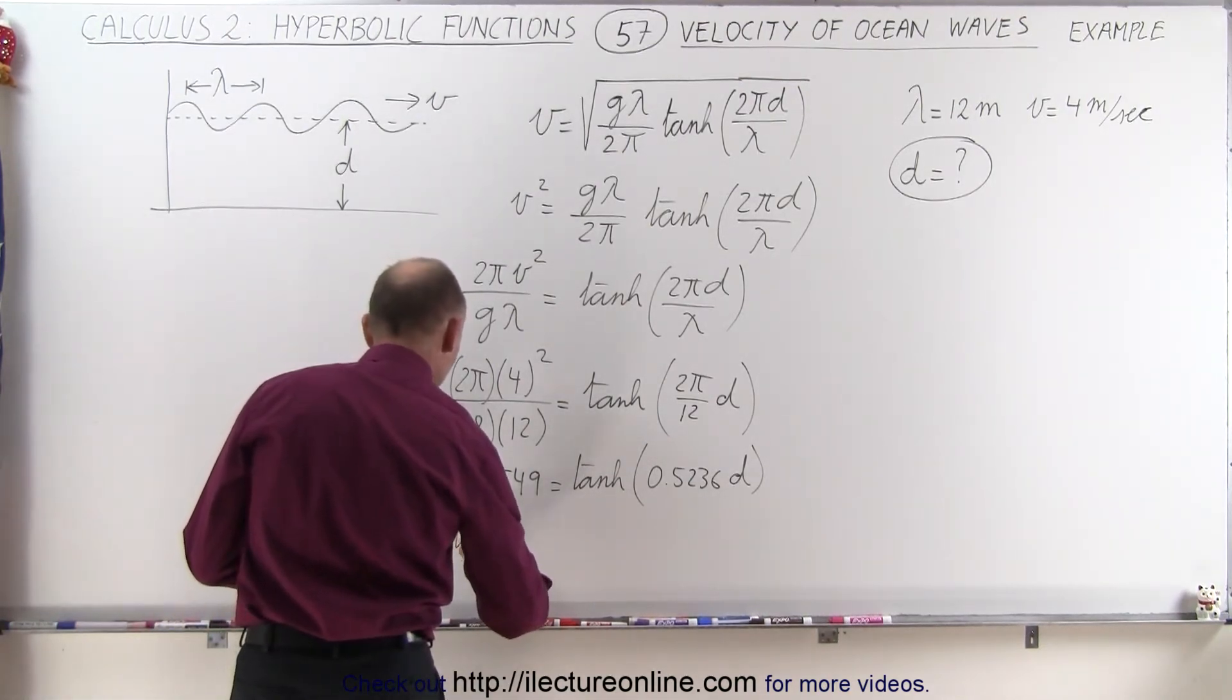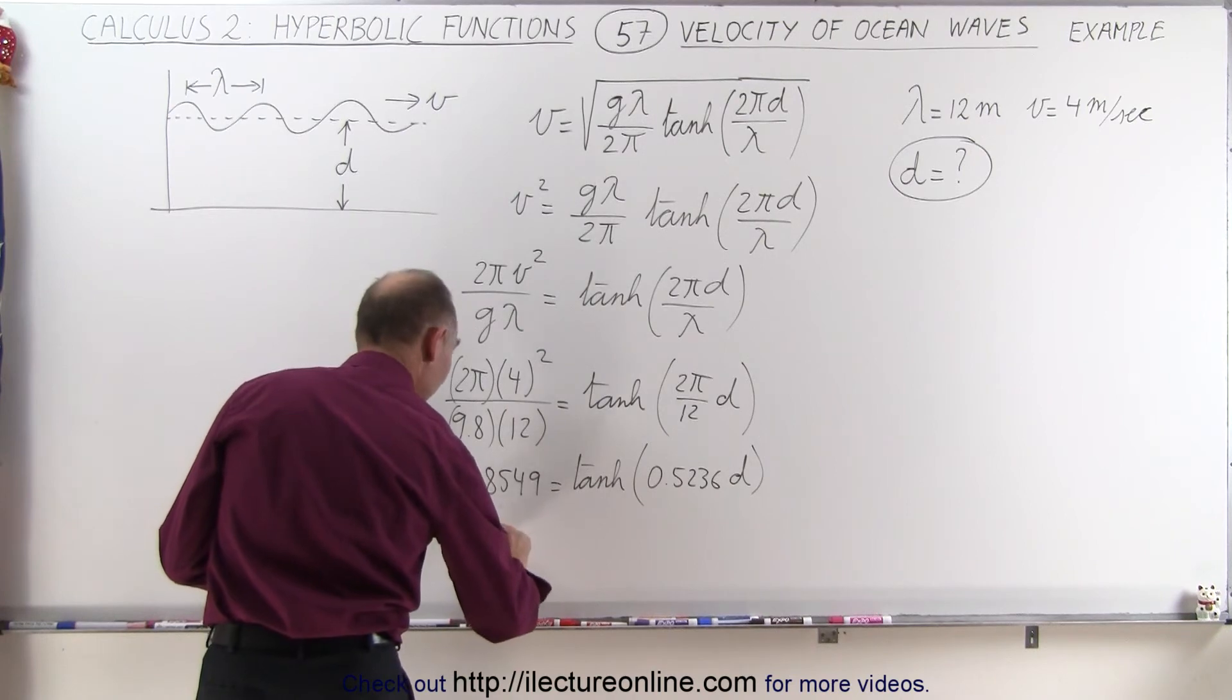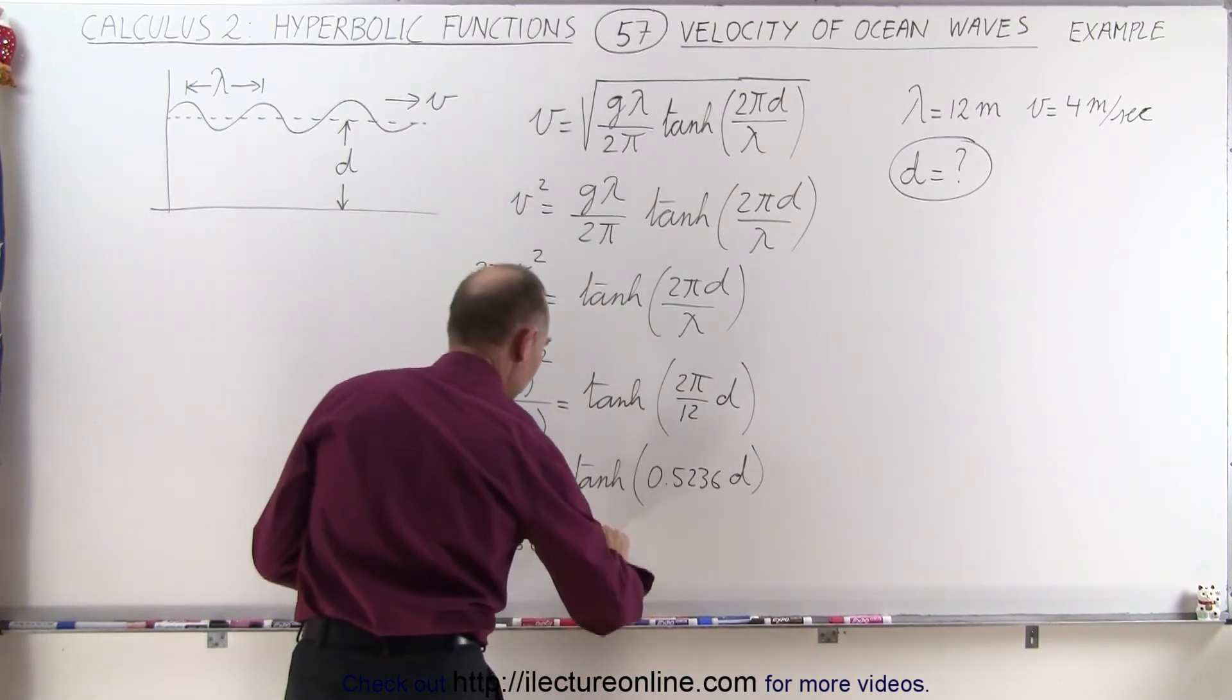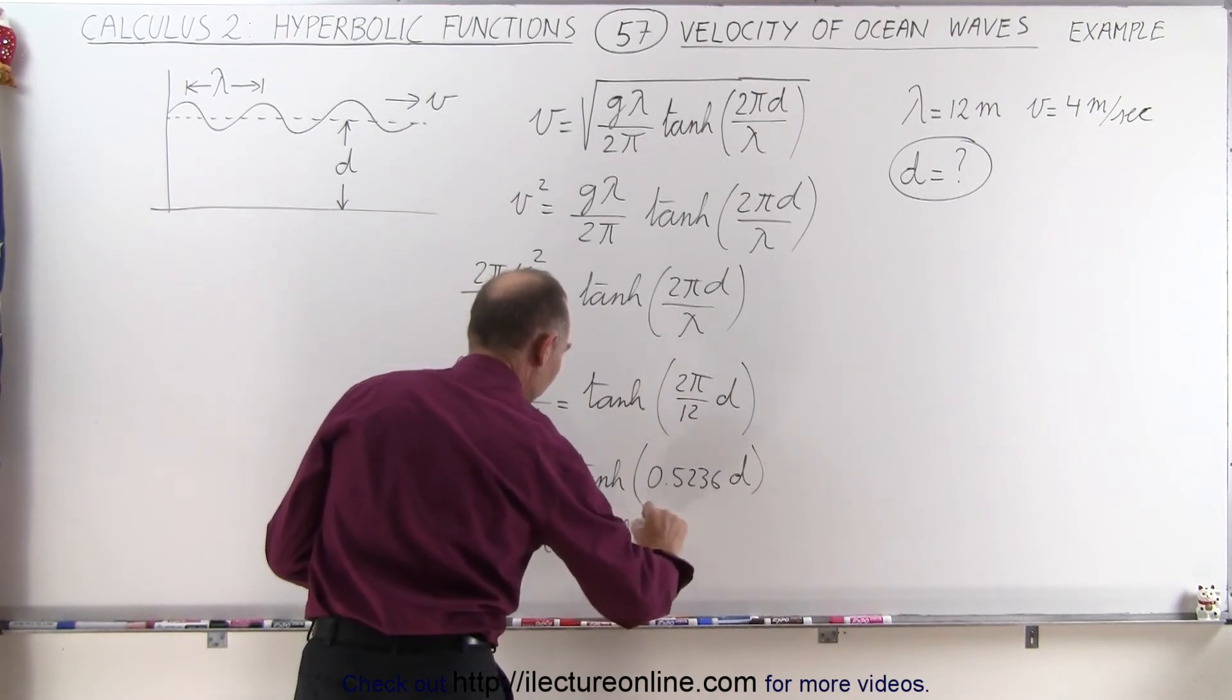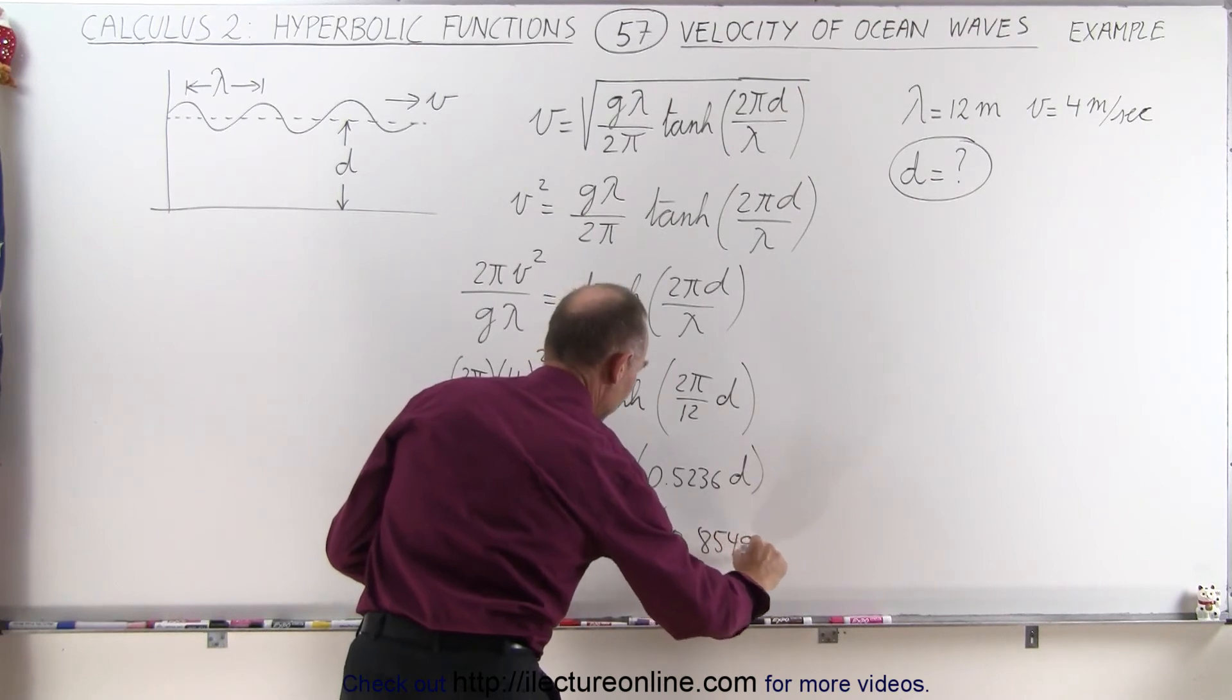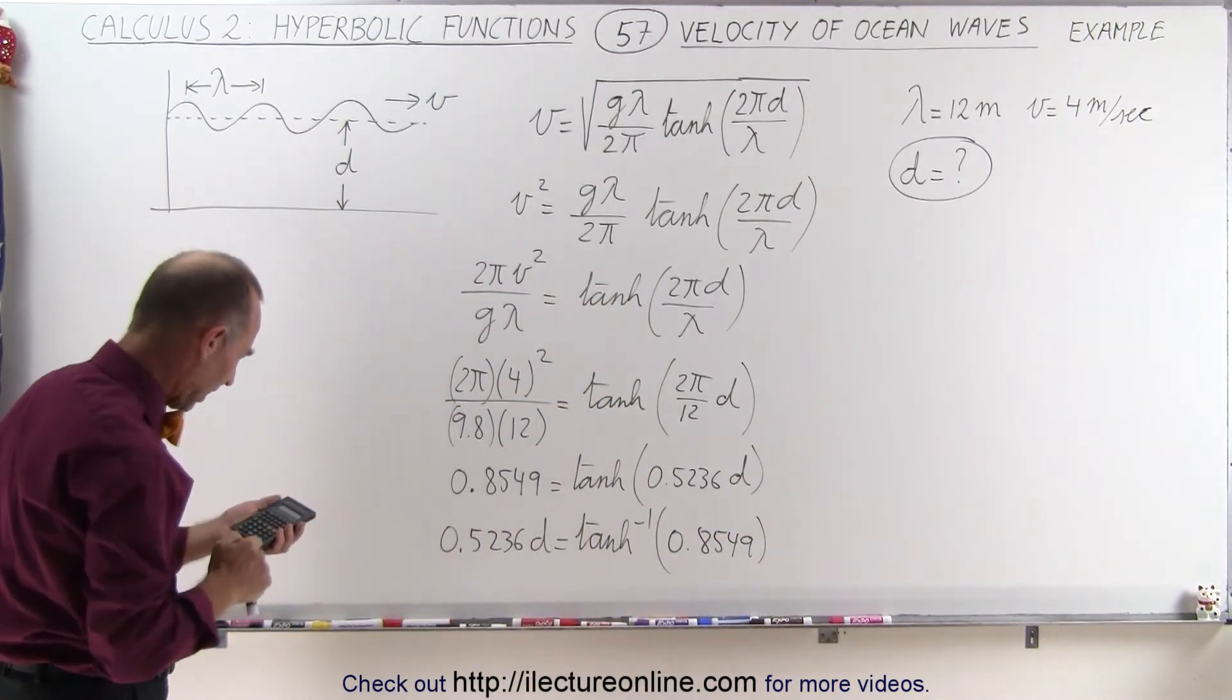So we can do that by saying that 0.5236d is equal to the inverse hyperbolic tangent of 0.8549. And now we just have to find the inverse hyperbolic tangent of that.